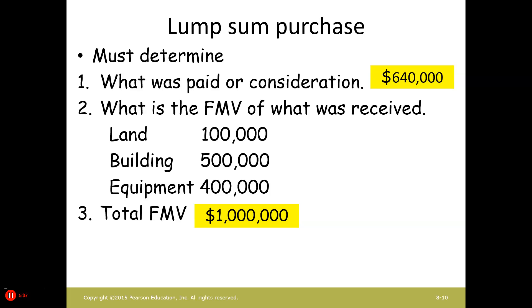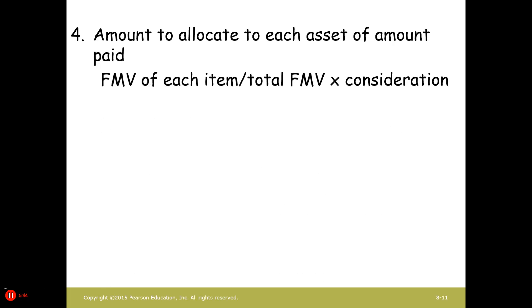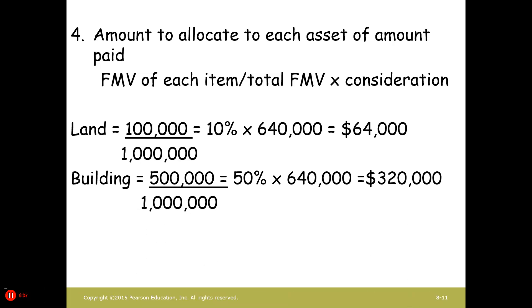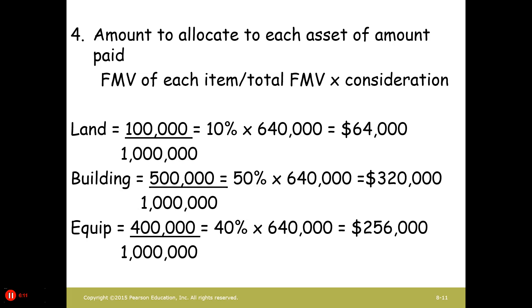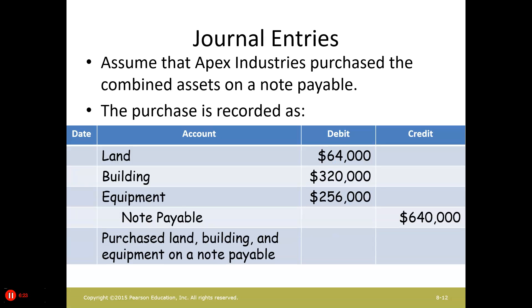To prorate it, we take the fair market value of each item divided by the total fair market value, times the consideration. For the land: $100,000 out of the $1,000,000 total fair market value equals 10%, times the consideration of $640,000, which means the land is allocated $64,000. We do the same for the building and equipment. Now we have all the information needed for our journal entry. The land would be $64,000, the building would be $320,000, the equipment gets its allocated amount, and then we credit notes payable.